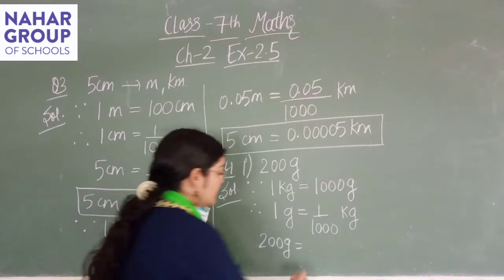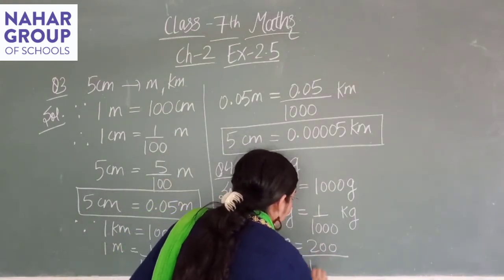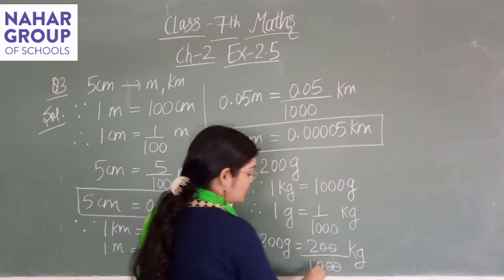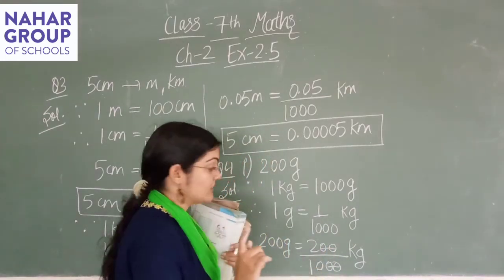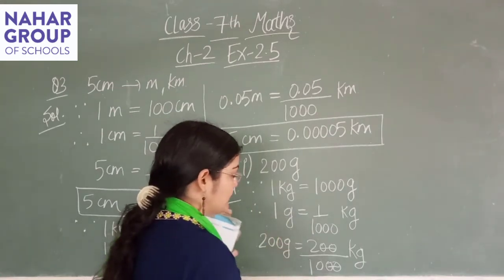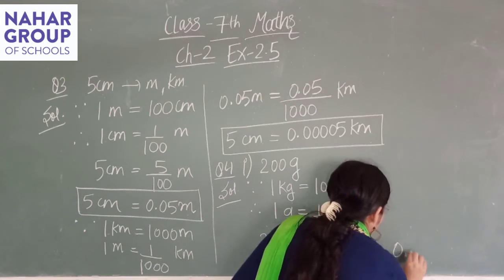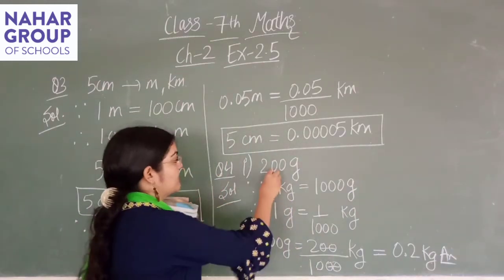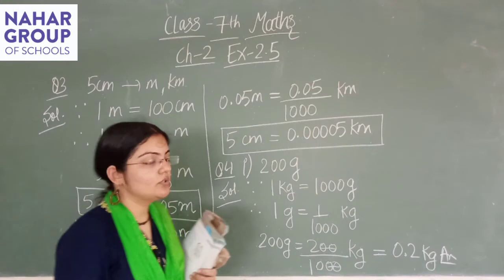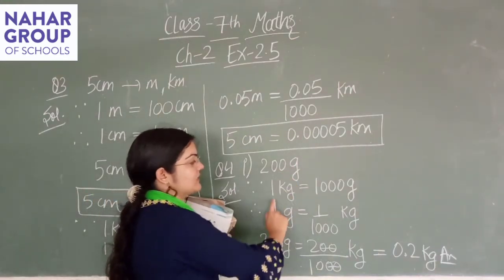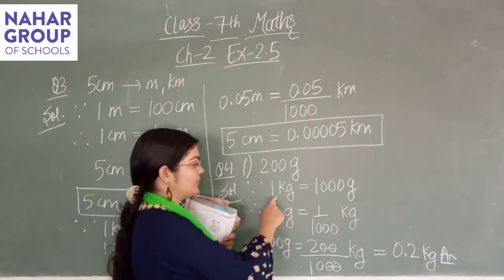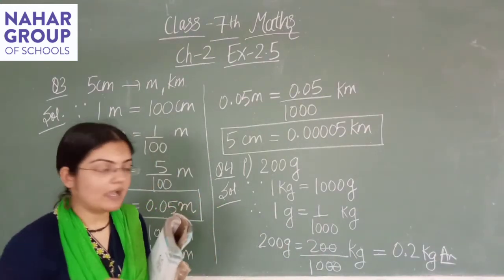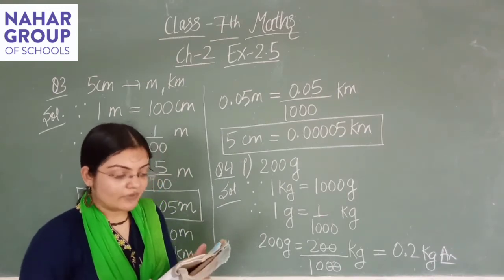तो 200 को 1000 से divide करेंगे। 200/1000 — 20 से 20 कट गए, 2 upon 10, means 1 zero है denominator में, तो point के बाद 1 digit चाहिए। So यह 0.2 kilogram बन जाएगा। 200 gram को kilogram में कर दिया और answer आया 0.2 kilogram। आपको इन दोनों के बीच relationship पता होनी चाहिए — relationship पता होगी तो किस से किस में convert करना है यह देख कर perform कर दीजिए।